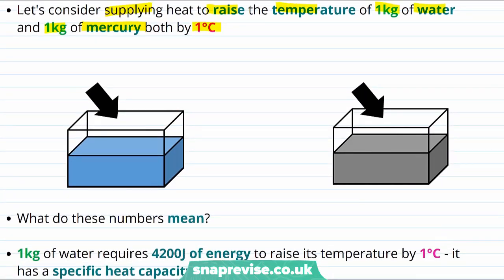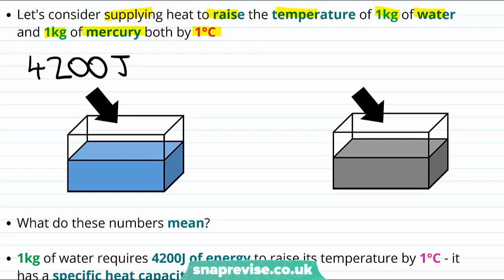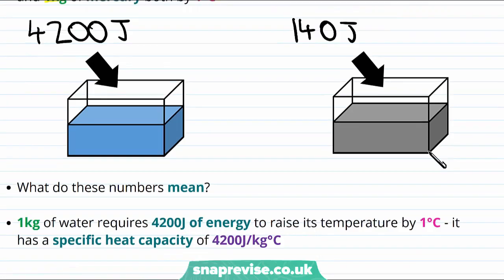Whatever the energy needed here is the specific heat capacity. For water, it turns out to be 4200 joules that are required to raise one kilogram of water by one degree centigrade. On the other hand, for mercury, we require just 140 joules to raise one kilogram of mercury by one degree centigrade.